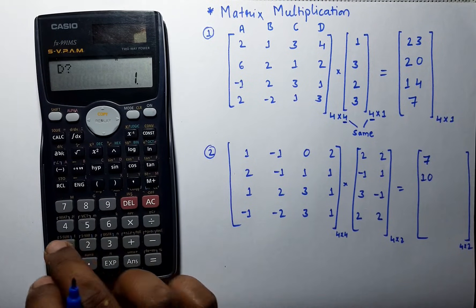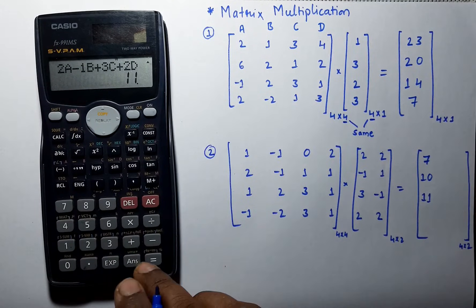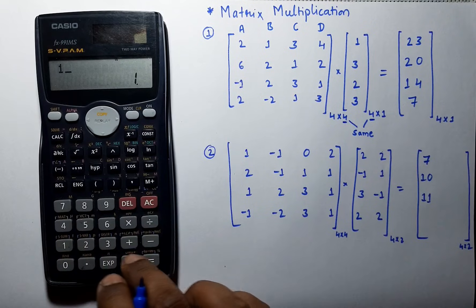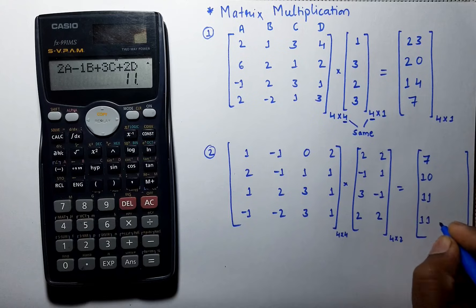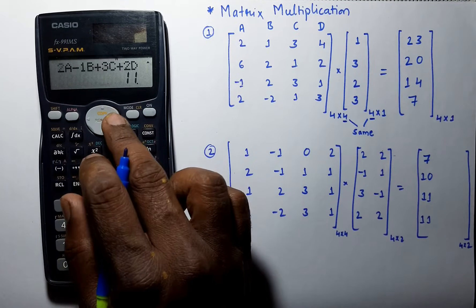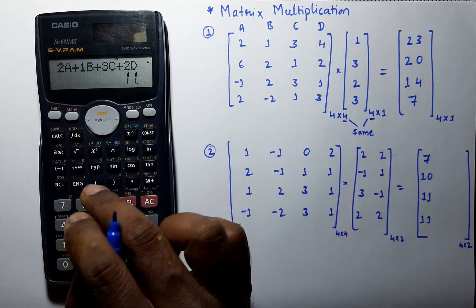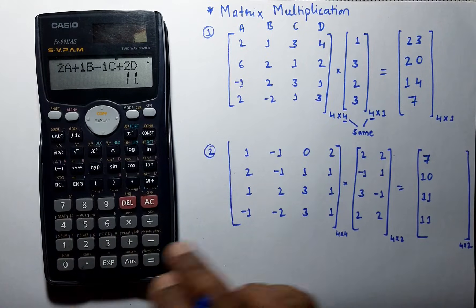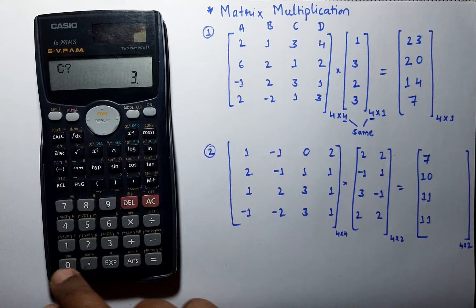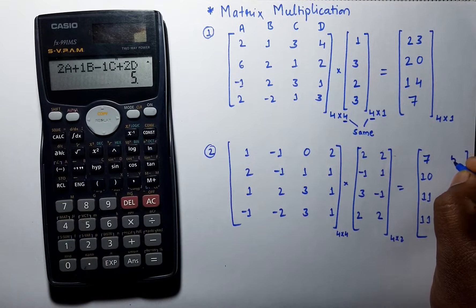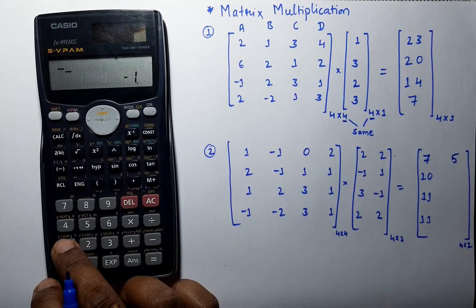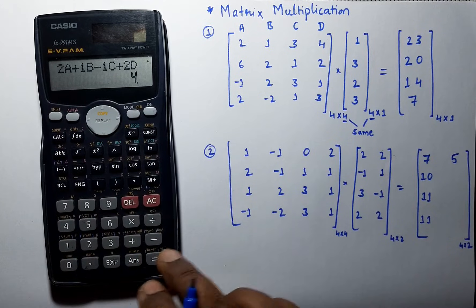Again press calculate and enter the values: a is 1, 2, 3, and 1 — answer is 11. Repeat the same process: minus 2, 3, and 1 — answer is 11. To find the next column, edit the equation with the next column values: 2, plus 1, next value is minus 1, and next value is 2. Press calculate and enter a, b, c, d as minus 1, 0, 2 — answer is 5. Enter the next row: minus 1, 1, and 1 — answer is 4.